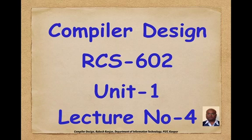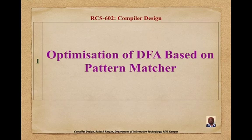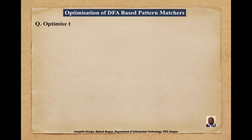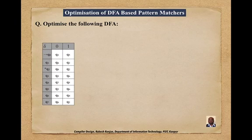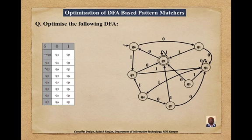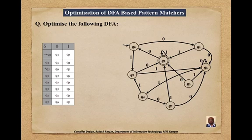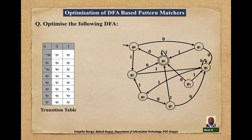Unit 1, lecture number 4. In this lecture we will discuss optimization of DFA based on the pattern matcher. We will discuss this topic with an example. Consider the following DFA — this is the transition table and its diagrammatical representation. We have states q0 through q7, the final state is q2, the start state is q0, and the input symbols are 0 and 1.